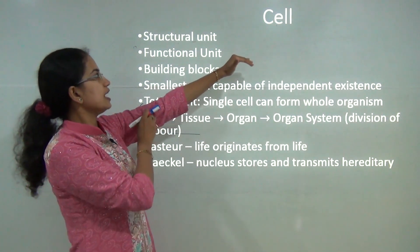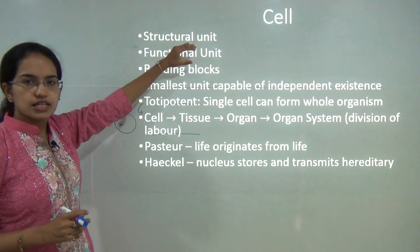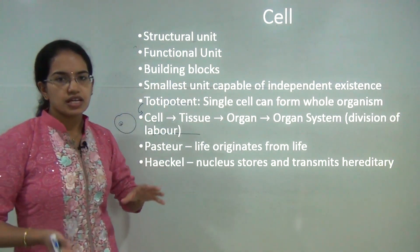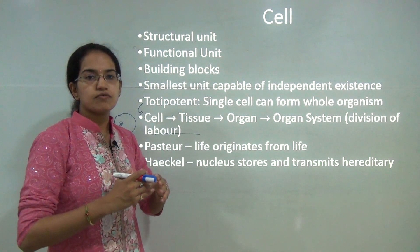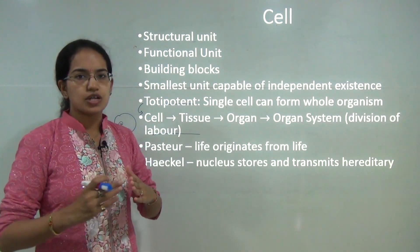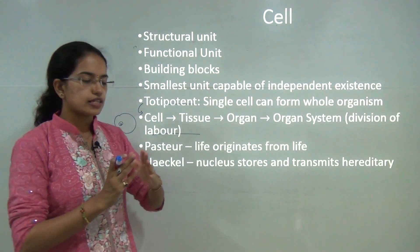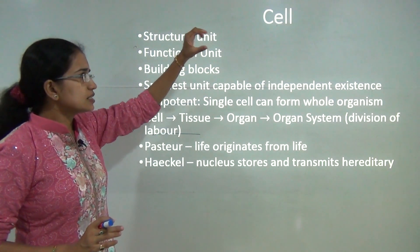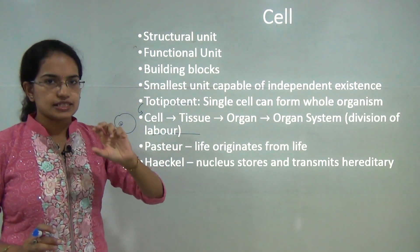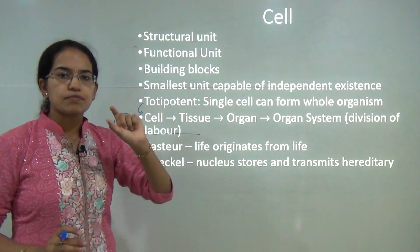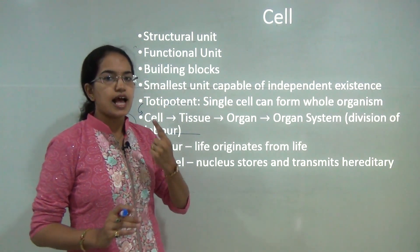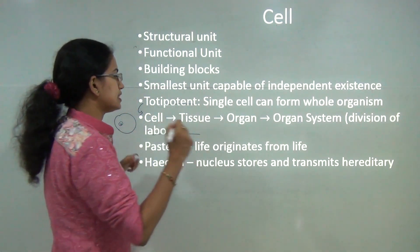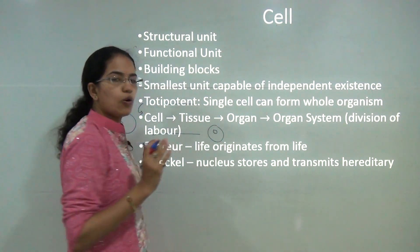Cell is the basic building block — the basic structural and functional unit. Based on the functions of the cell, there are various modifications you can see. For example, a nerve cell would have a different function from an RBC cell. Cells are the smallest units which can independently exist, and these cells are totipotent — meaning a single cell has the capability to produce the whole organism.